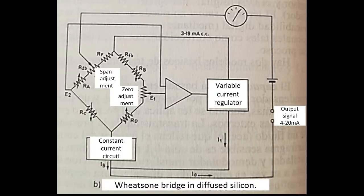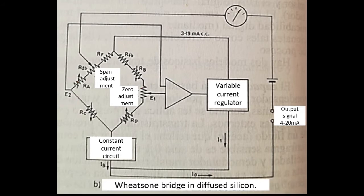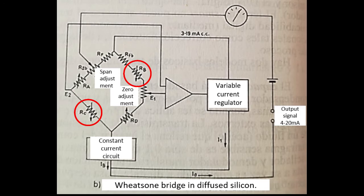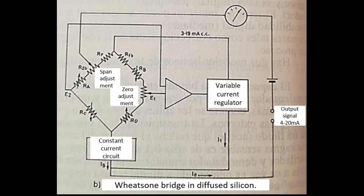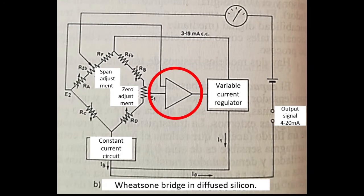This behaves like a dynamic Wheatstone bridge circuit. E1 and E2 are equal when there is no pressure. When pressure is applied, Rb and Rc decrease their resistance while Ra and Rd increase it, which causes voltage drops and a difference between E1 and E2. This is applied to a high-gain amplifier that controls a variable current regulator.